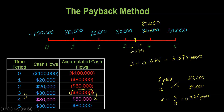That is how you calculate the payback period when accumulated cash flows move from negative to positive. The general rule is: first, figure out the last year in which your accumulated cash flows are negative — which is year three. Then figure out how much you're getting in the year where accumulated cash flows go from negative to positive — which is $80,000. Then take the amount you actually need off that cash flow — $30,000 — and divide it by what you're actually getting — $80,000. So the payback period is 3 + (30,000 / 80,000) = 3.375 years.